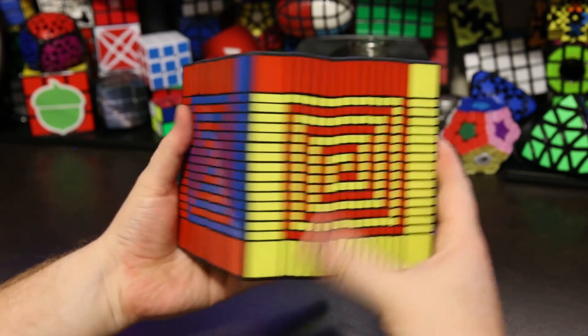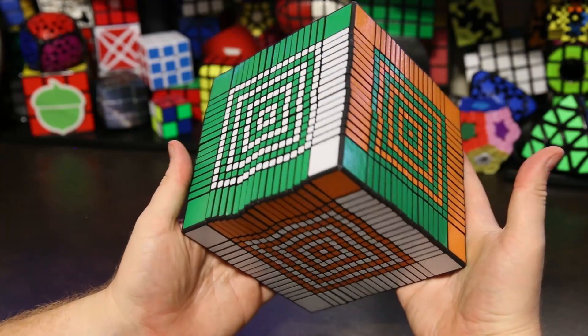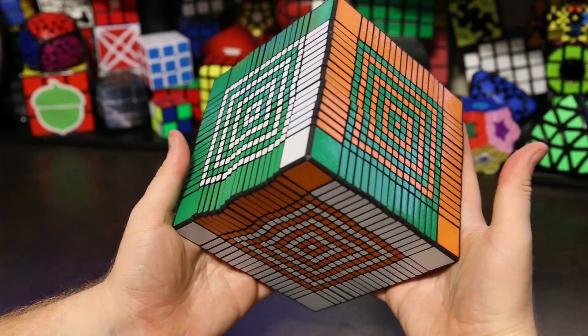Here's the spiral pattern. It looks awesome. You can see the spirals here on the red, blue, and yellow side, but I didn't do it on the green, orange, and white side because it probably would take me twice as long to do it. I only did it on these sides.